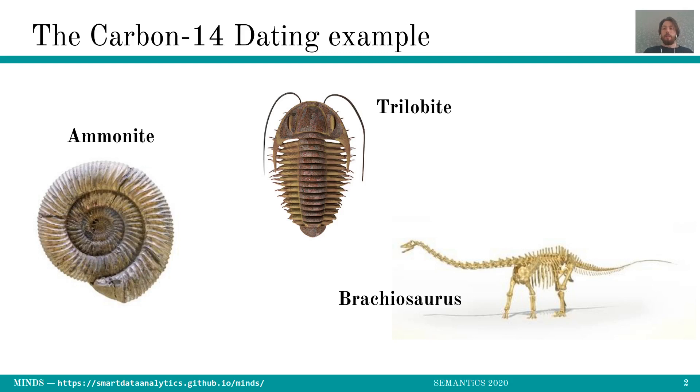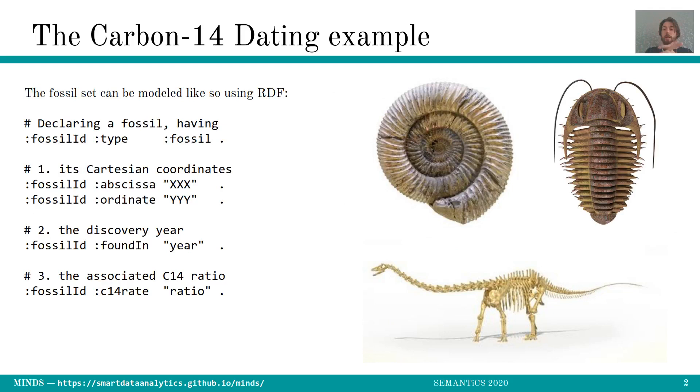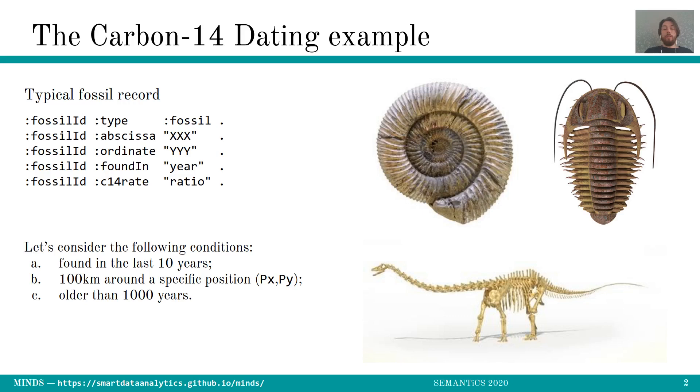But first of all let's have a look at a concrete example, an example dealing with carbon-14 and fossils. Let's imagine that we have a set of fossils and the records could be modeled like so using RDF. So you declare a fossil of type fossil, a fossil ID, and for each fossil you have its Cartesian coordinates x and y, its discovery year, the fossil has been found in 2020 for instance, and then its associated carbon-14 ratio.